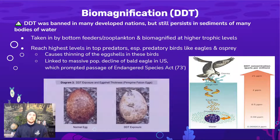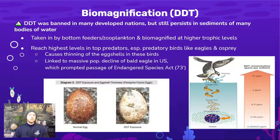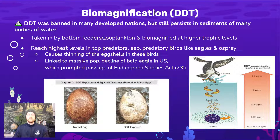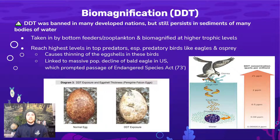One of those effects is the thinning of eggshells. We can see photos of a peregrine falcon eggshell here, but this also happened with the bald eagle and was one of the causes for the passage of the Endangered Species Act in 1973. Bald eagles had a dramatic population decline in the U.S. linked to DDT causing thinness in their eggshells, actually killing hatchlings before they could even hatch. With the eagle being our national symbol, something needed to be done — a powerful case study of how biomagnification can have dramatic impacts at high trophic levels.